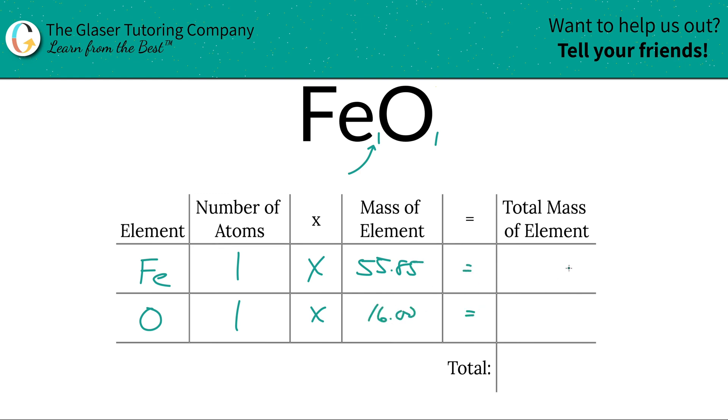Then all we have to do to find the total mass of the element in the compound is multiply the number of atoms by the mass. So this is going to be 55.85. And then for oxygen it's 16. And then when you add those two together that's when you find the total. All right. So the total mass here of iron two oxide is going to be 71.85.